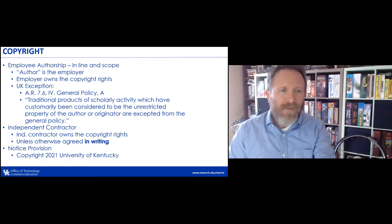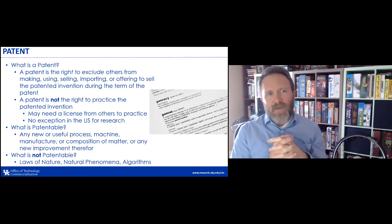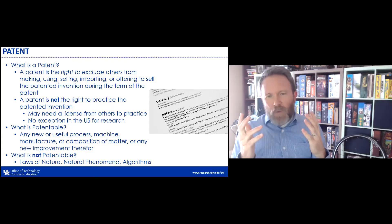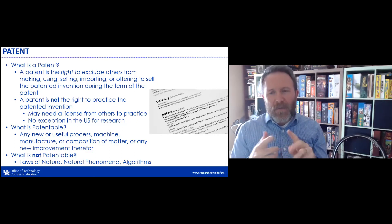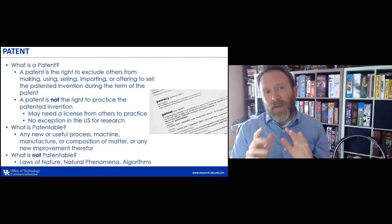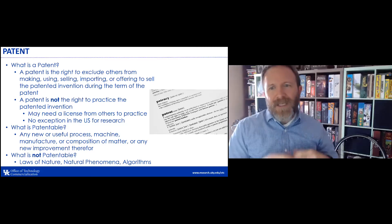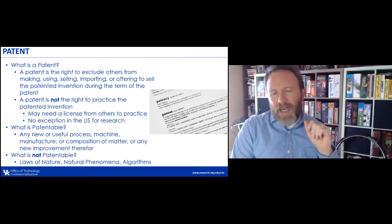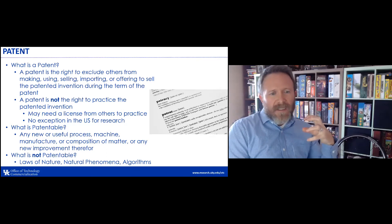Next, we move to patents — the next common form of IP here at the university. At its core, a patent is a right to exclude others from making, using, selling, importing, or offering to sale the patented invention during the term of the patent. Importantly, a patent is not the right to practice the patented invention. There are many instances where someone can get a patent and be able to exclude others but not be able to make the product themselves — they may need a license from others to practice.